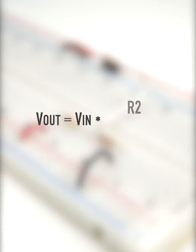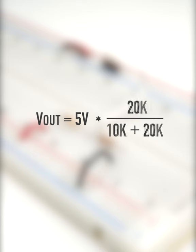We can use this simple equation to determine that voltage. So with a 5 volt supply voltage, a first resistor value of 10k ohms, and a second value of 20k ohms, the voltage available between the resistors should be about 3.33 volts.